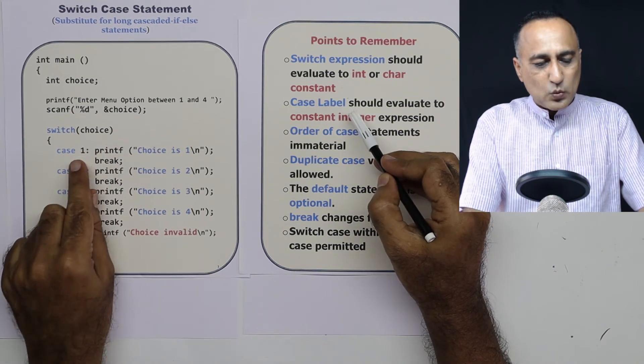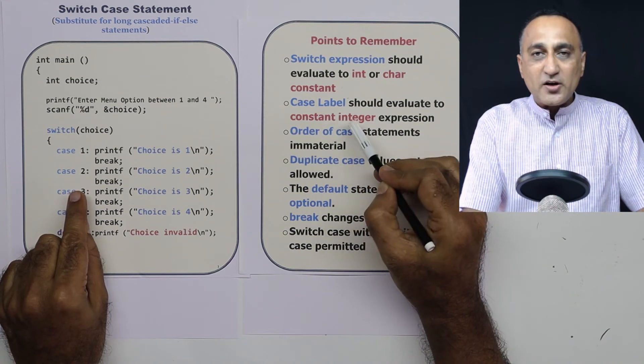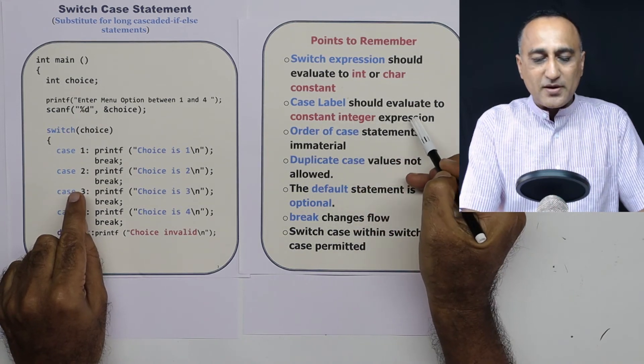Case labels, that means this 1, 2, 3, 4, these are called case labels. They should again evaluate to a constant integer type of expression.